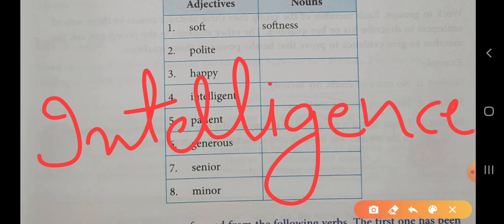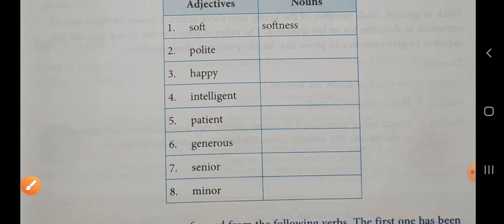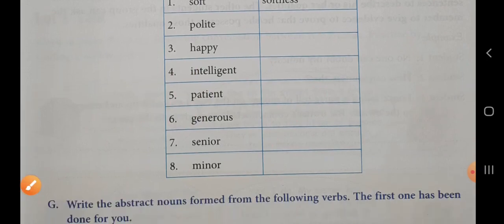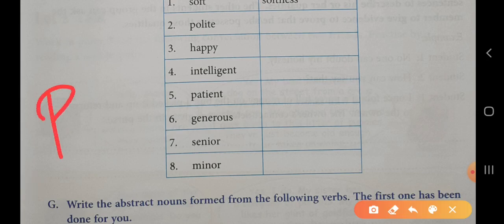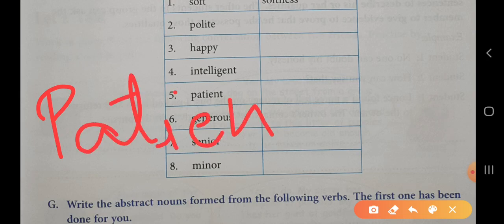The next one is patient. The abstract noun for patient will be patience. You can see that patient is written P-A-T-I-E-N-T. We will remove T and add C-E. So this will be the abstract noun for patient. Our next, number six: